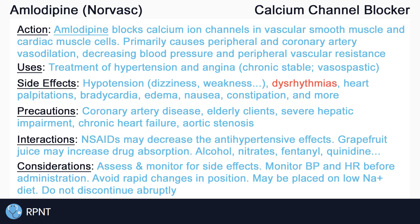Monitor heart rate and blood pressure before administration. Typically, if apical heart rate is less than 60 beats per minute or systolic blood pressure is less than 90, hold the medication and notify the provider. Especially for elderly clients, instruct clients to avoid rapid changes in position, such as changing from sitting to standing, to reduce the risk of orthostatic hypotension and falls.